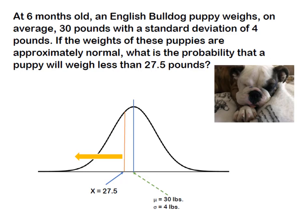So we've represented this problem on the curve. I have my mean and my standard deviation that was given to me. We want to know the probability that the puppy will weigh less than 27 and a half pounds. It's our value of X. This area represented by this arrow is the portion of the curve that we're solving for.